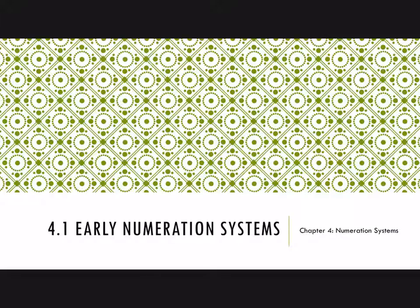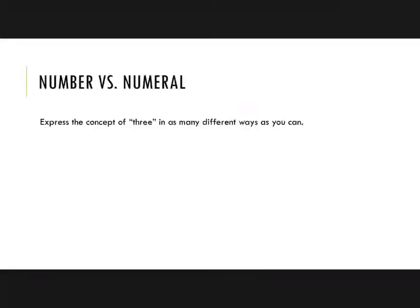In section 4.1 there's a distinction we need to make between number and numeral before we look at some of the early numeration systems. So try this exercise first: see how many different ways you can think of to express the concept of three. How would you communicate three to someone else?